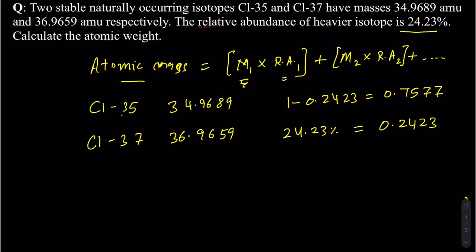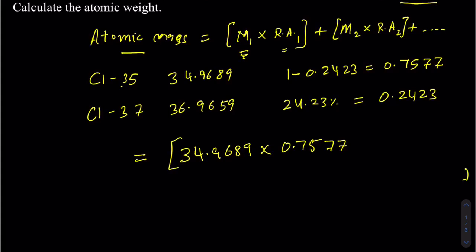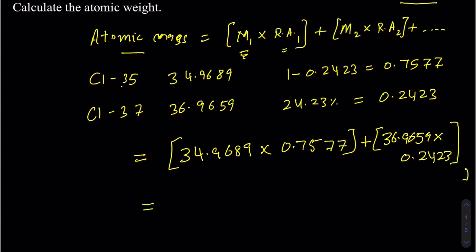Now I know everything, so let's figure out the atomic mass of chlorine. It's going to be the mass of isotope 1 — 34.9689 — times its relative abundance of 0.7577, plus the mass of isotope 2 — 36.9659 — times its relative abundance of 0.2423. So: 34.9689 × 0.7577 + 36.9659 × 0.2423, and that comes out to be 35.453.